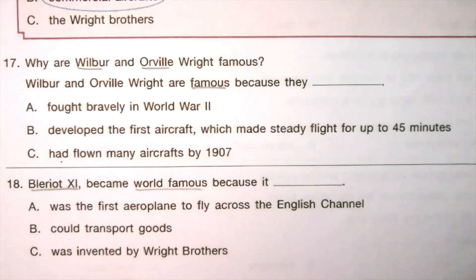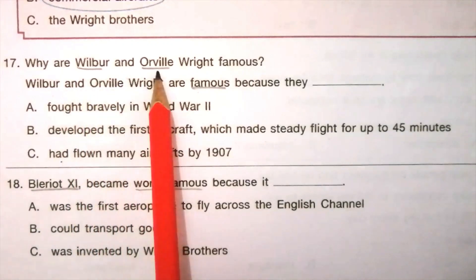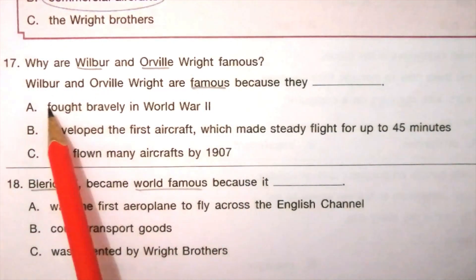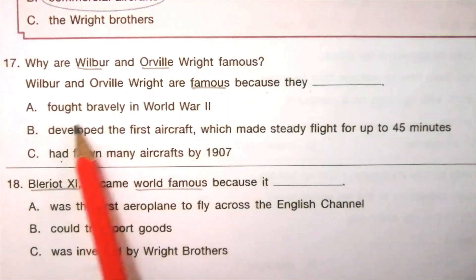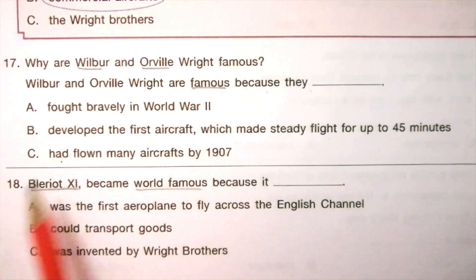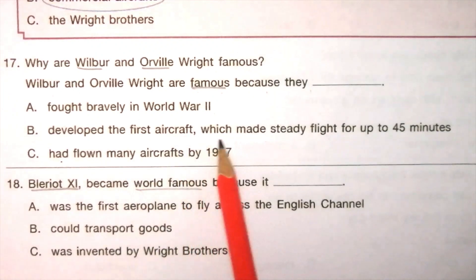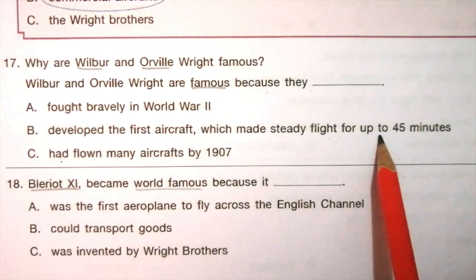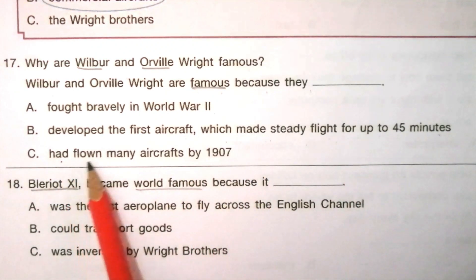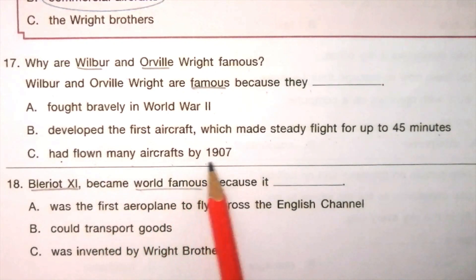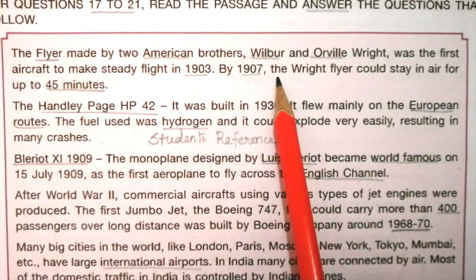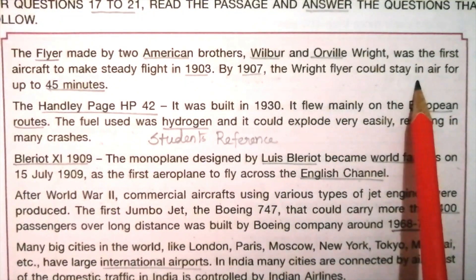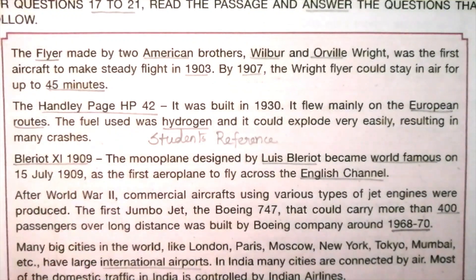Question 17: Why are Wilbur and Orville Wright famous? Options: A) They fought bravely in World War II; B) They developed the first aircraft which made steady flight for up to 45 minutes; C) They had flown many aircrafts by 1907. The answer is B. The clue is given in the passage: the Wright Flyer could stay in the air for up to 45 minutes.